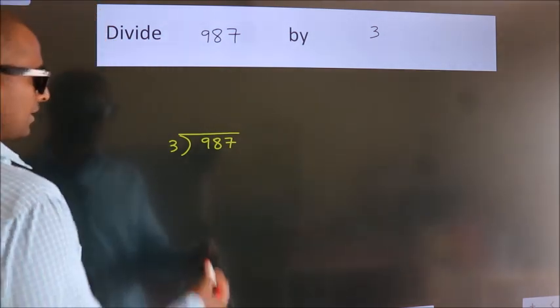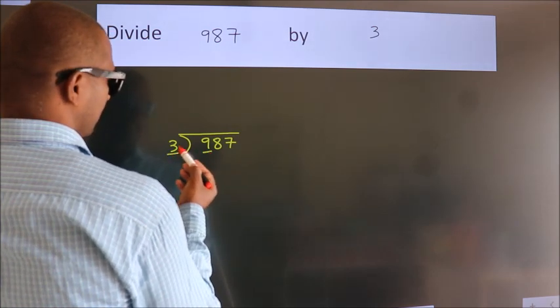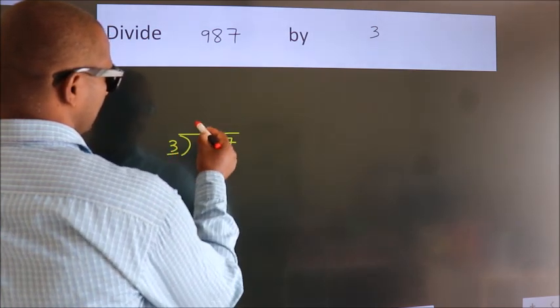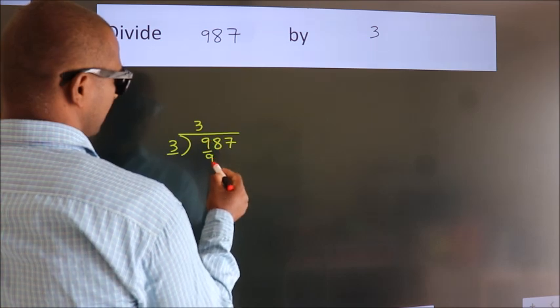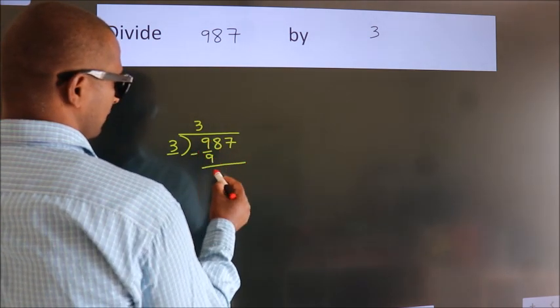Next. Here we have 9, here 3. When do we get 9? In 3 table. 3 times 3 is 9. Now we should subtract. We get 0.